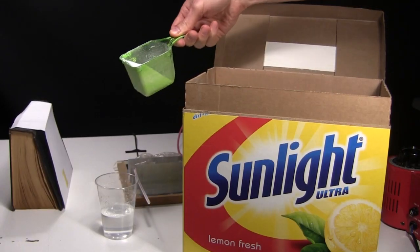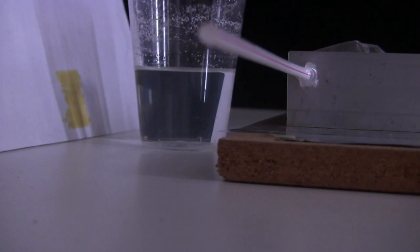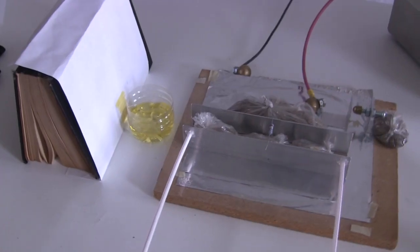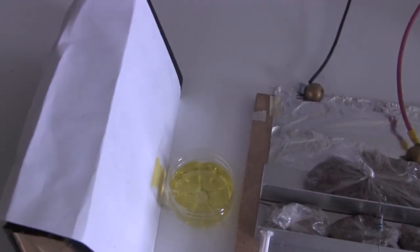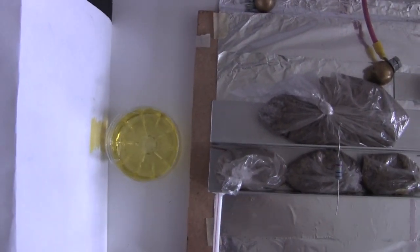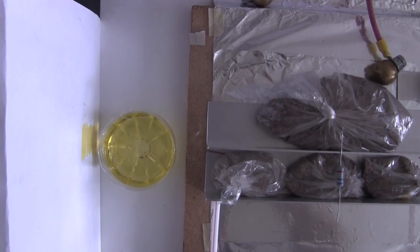Normal laundry detergent that doesn't have any whitener or brightener didn't work. Bleach also didn't work. I read that urine fluoresces, but I guess nothing in it absorbs and re-emits the tea laser's 337 nanometer light. It's either that or I haven't eaten the right foods.